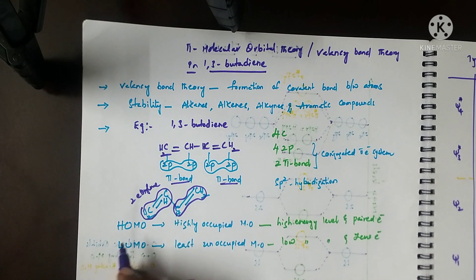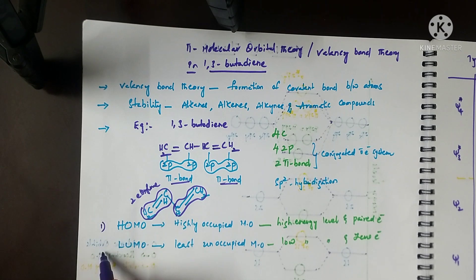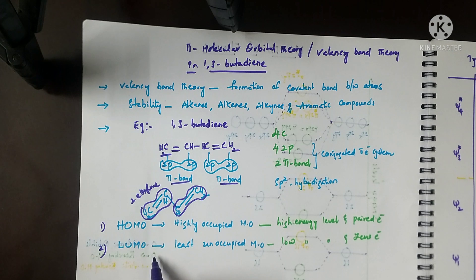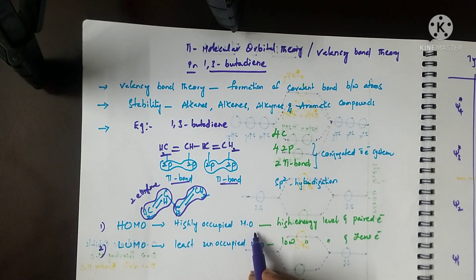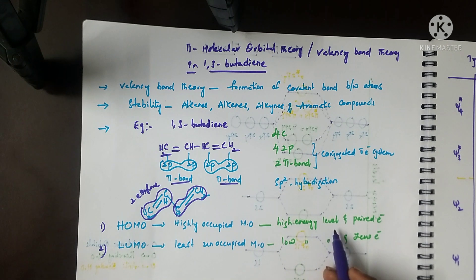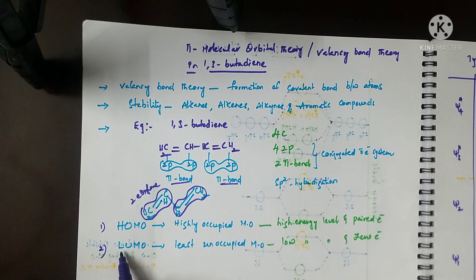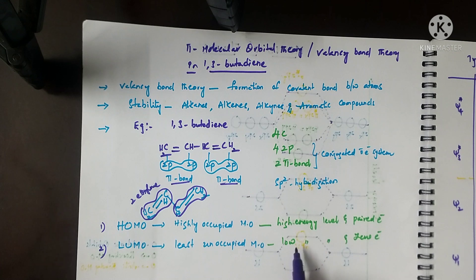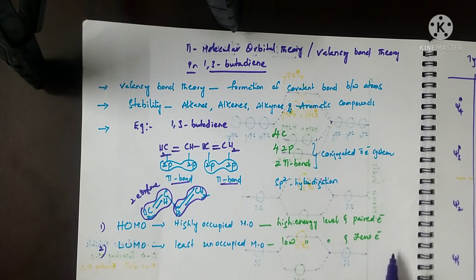Based on their electron filling, molecular orbitals are divided into two types. One is HOMO and the second is LUMO. HOMO is the highest occupied molecular orbital — it has a high energy level and paired electrons. LUMO is the lowest unoccupied molecular orbital — it has a lower energy level and zero electrons.